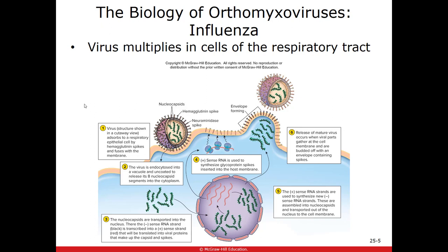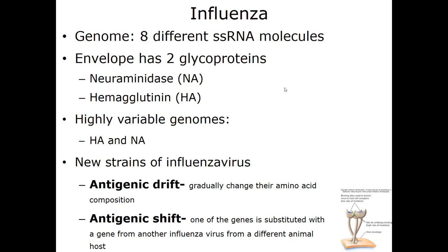The influenza virus targets the respiratory tract and is spread through respiratory secretions. It targets the cells of the respiratory tract, gets inside, reproduces, and leaves. However, it does cause damage to those cells. Because the respiratory tract is a huge first line of defense for everything we breathe in, we suffer a lot of secondary infections when we lose that first line of defense.